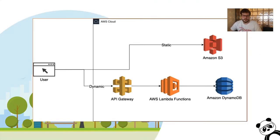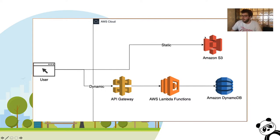The access flow looks like this: we have our S3 bucket which stores our static content — that's what we access in the browser. When we make calls to the API, these get routed through the API gateway through a Lambda function, which interacts with our DynamoDB database.